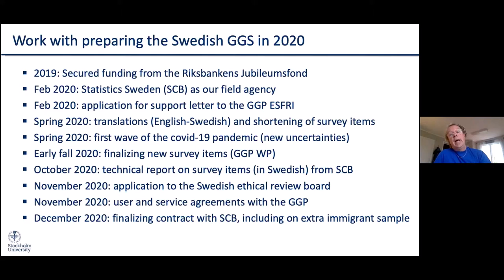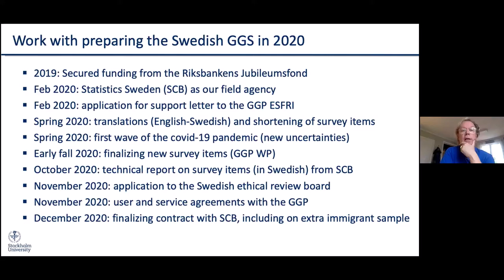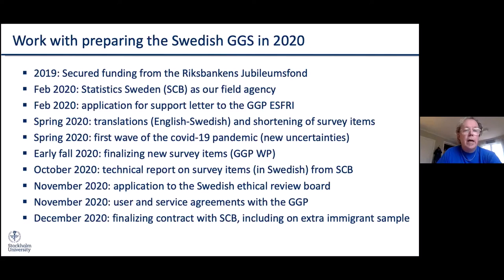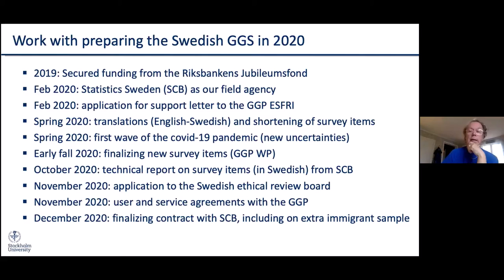During the fall, in October, we got a technical report on the survey items from Statistics Sweden with good input on feasibility of questions, formulation, and ordering, which led to further modifications. They also thought our survey was far too long for a web version, so we cut down even more on survey items. We had to apply to the Swedish Ethical Review Board, which caused some iterations over whether we could ask all the questions we wanted. We then finalized the contract with Statistics Sweden, signed in January 2021. At that time we also decided to include an extra immigrant sample, since we had several migration projects wanting to support additional samples on immigrants.